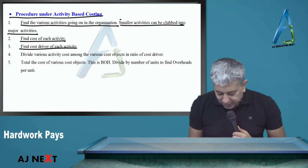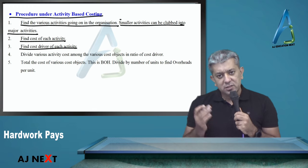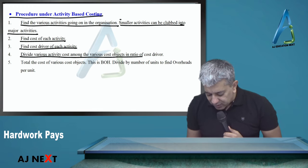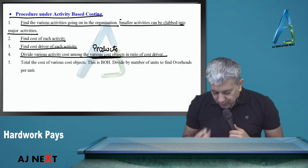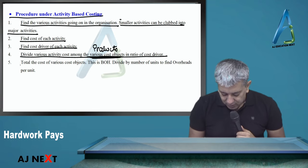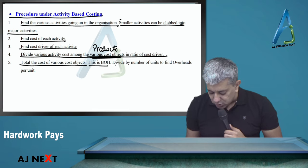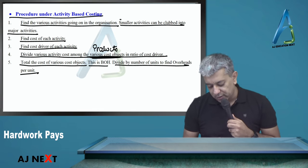Find out the cost of each activity and the cost driver for each activity. Cost driver means the factor because of which cost changes. Divide various activities among the various cost objects in the ratio of cost drivers. Cost objects are your products. Then total the cost of various cost objects. This is BOH. Directly divide by number of units to get overheads per unit.